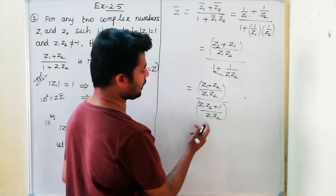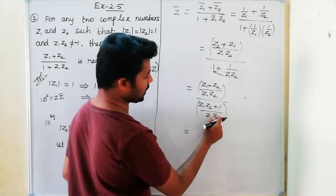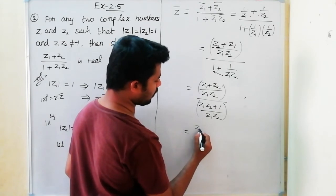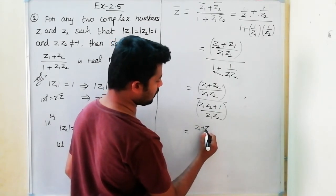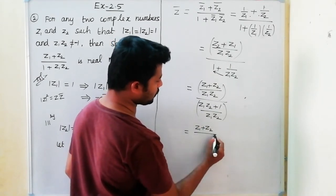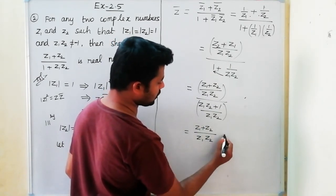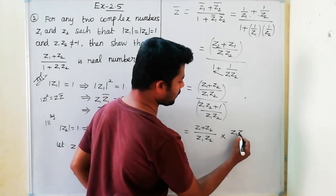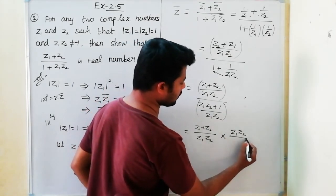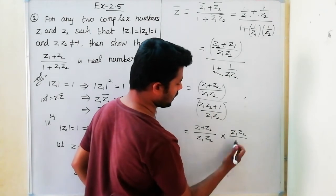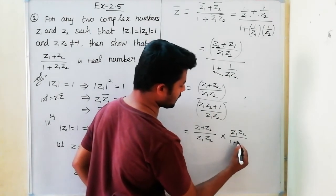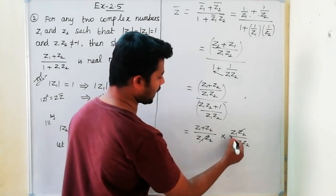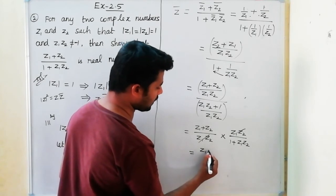The z1·z2 in numerator and denominator cancel out. So the numerator (z1 plus z2) divided by z1·z2, multiplied by the reciprocal z1·z2 divided by (1 plus z1·z2), gives (z1 plus z2) divided by (1 plus z1·z2). The z1·z2 terms cancel, giving the final answer.